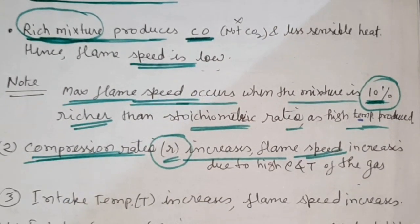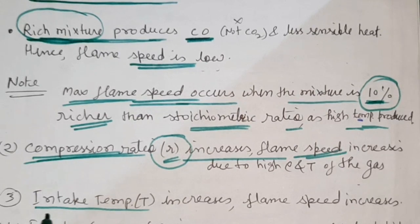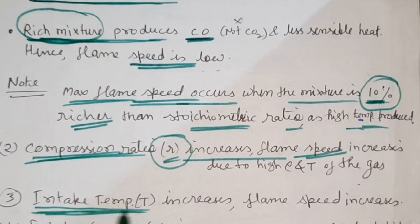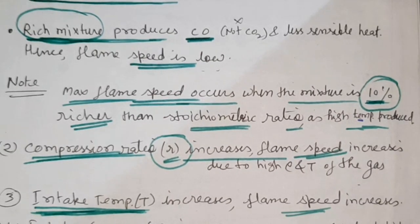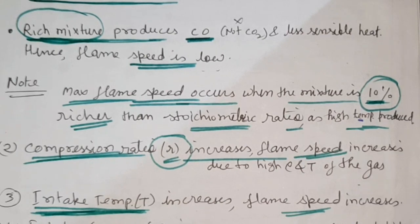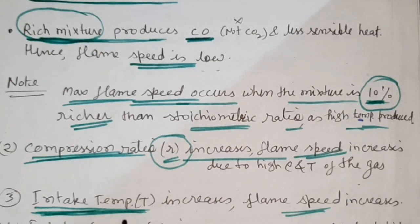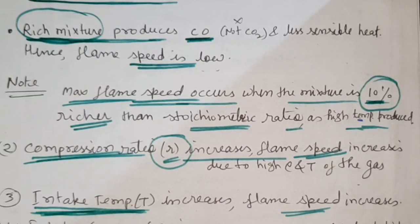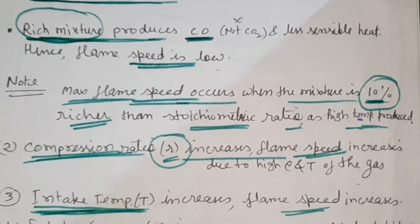The next point is intake temperature or inlet temperature. If inlet temperature is increased, then flame speed will also increase. Similarly, if intake pressure is higher, the temperature will be increased, and the increase of temperature will increase the flame speed due to higher density.